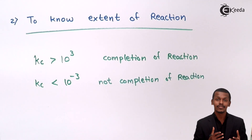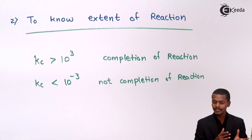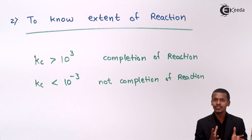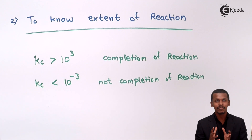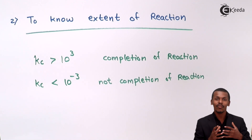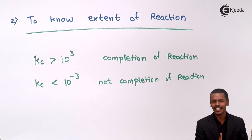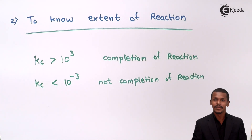There is no completion of the reaction in that case. If the value falls between 10 raised to 3 and 10 raised to minus 3, we can calculate the equilibrium concentration for that particular reactant and product, which gives a significant value. This is how Kc plays a vital role in understanding the extent of a particular reaction.